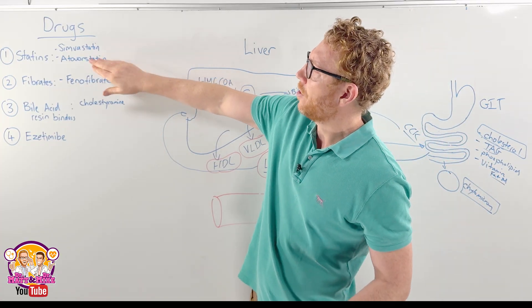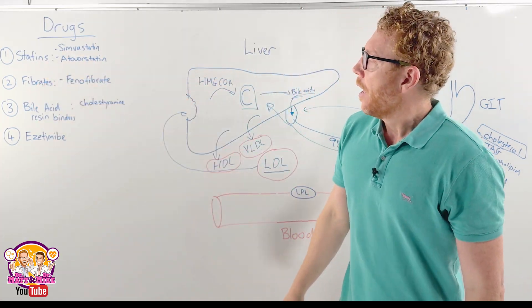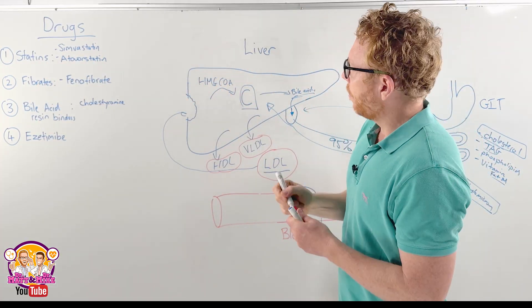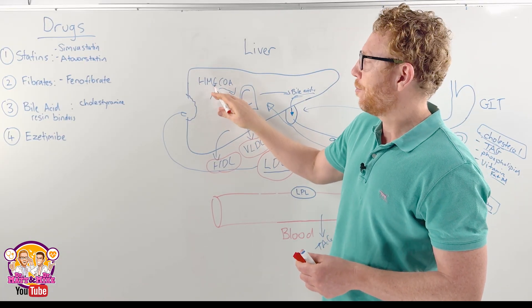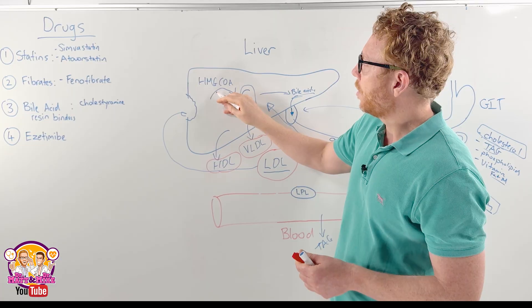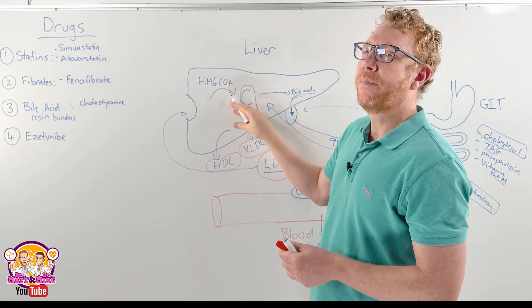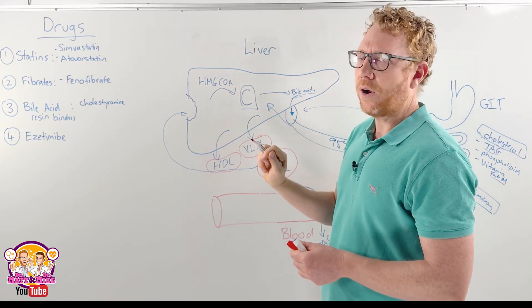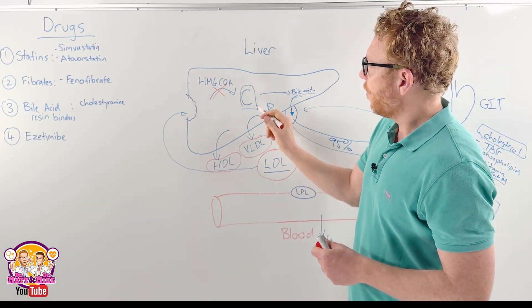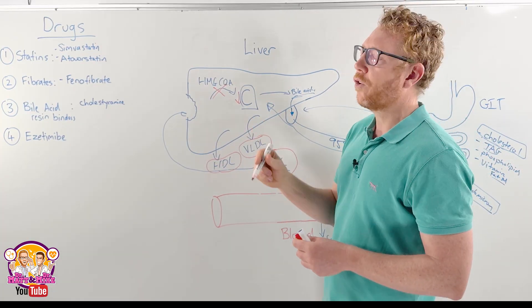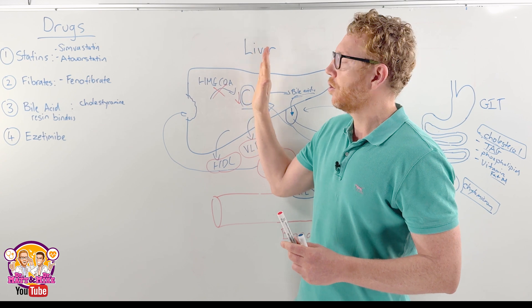So the first group of medications, which are the statins, really work by this enzyme here. So we've got the HMG-CoA, but we've got an enzyme called HMG-CoA reductase which modifies it to mevalonic acid and then cholesterol, and this statin medication blocks that. Therefore, cholesterol levels will start dropping in the liver. This is the endogenous pathway.